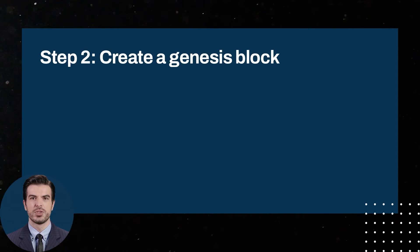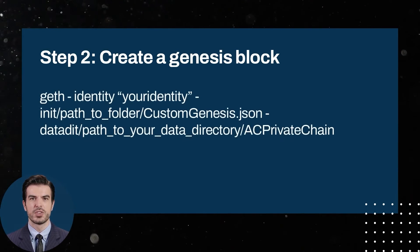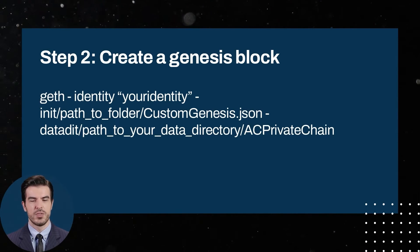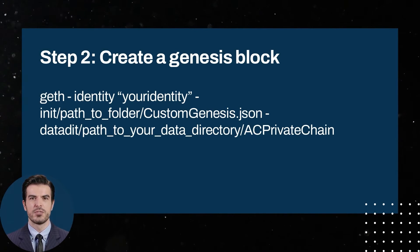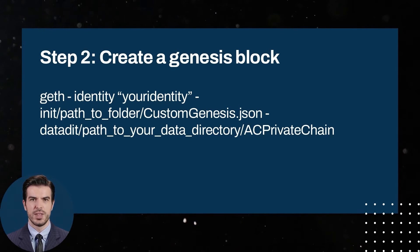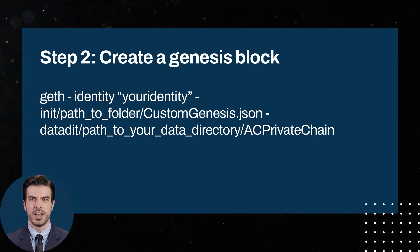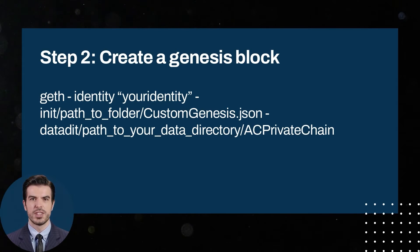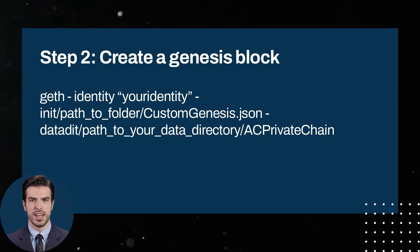After creating the Genesis file, open Geth and enter the following command. This command instructs Geth to use the customgenesis.json file we previously created to generate the first block of the private Ethereum blockchain. The path-to-folder attribute is the folder where you save the Genesis file, whereas the attribute path-to-your-data-directory indicates the folder in which the data of our private chain will be stored, created in the first step. When you run the specified command, you will see how Geth connects to the Genesis file and provides confirmation of the successful completion of the action.